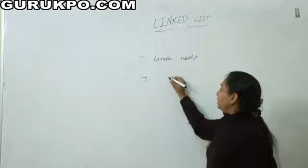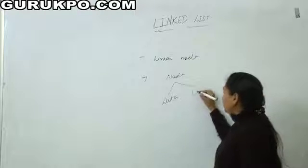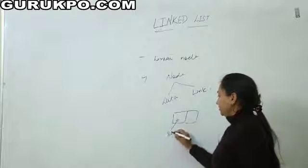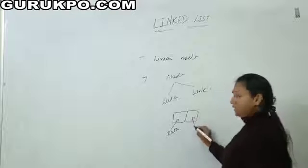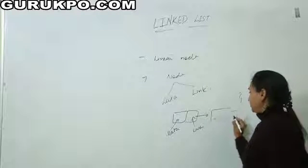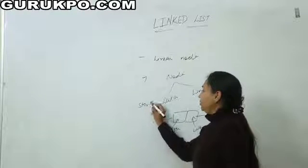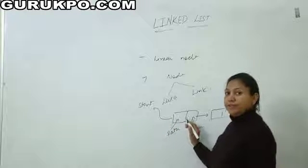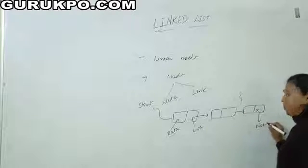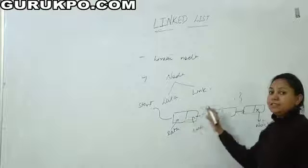What is a node? A node is divided into two parts: first is a data part, and next is a link part. The data part stores the information of our element, and the link part stores the pointer or address of the next element. We also have a start pointer which stores the address of the first element. In a linked list, the last node stores a null element, represented by a cross sign, to indicate that the linked list stops there.